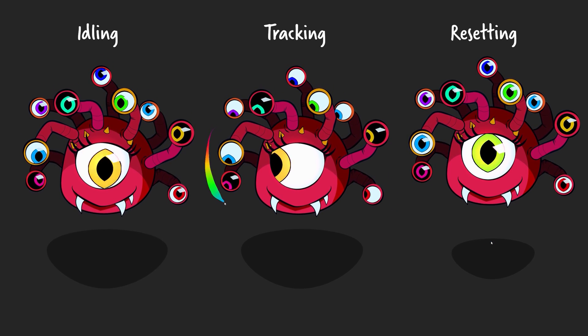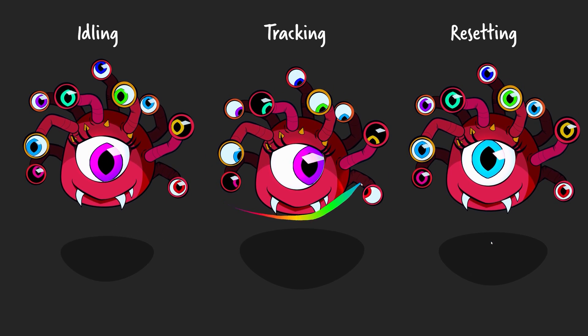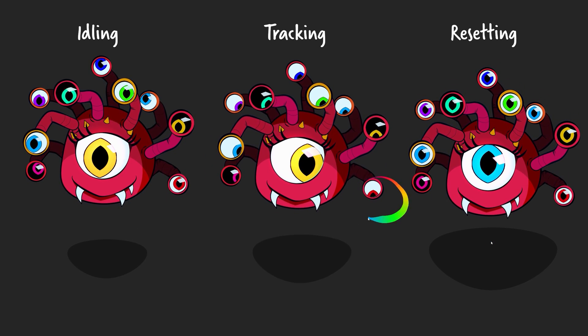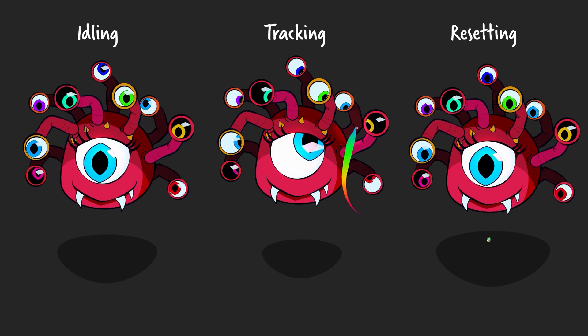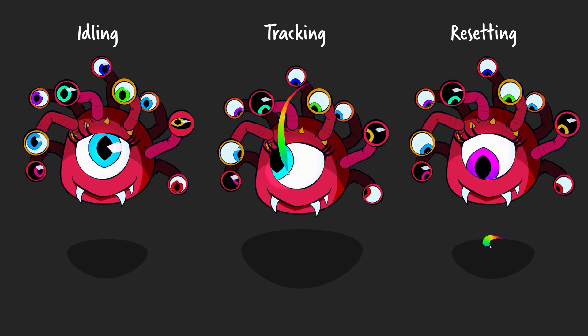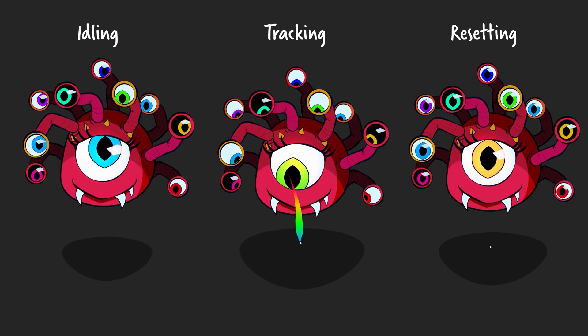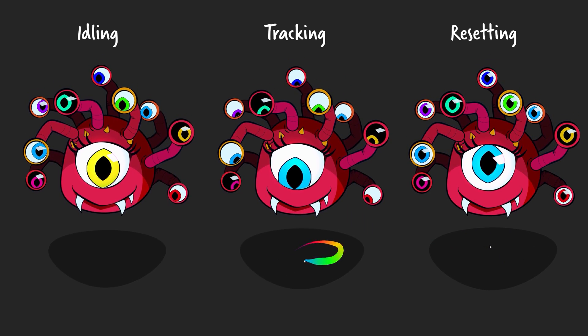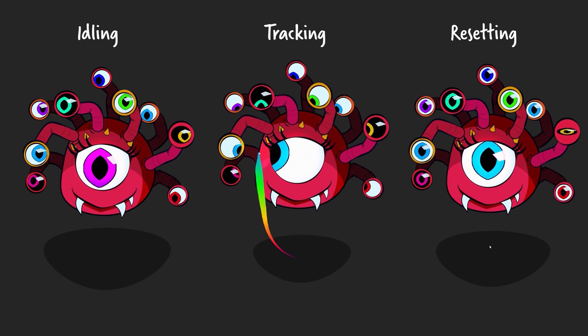Additionally, if the target hasn't moved inside the area we are watching for a specific amount of time, the pupils will reset and track once again as soon as new movement occurs.